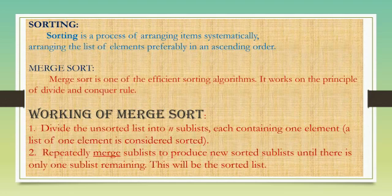First there is an unsorted list. That unsorted list is divided into n sub-lists until each sub-list contains one element — this is how the dividing part is completed. Then we have to merge these elements: we merge adjacent sub-lists to produce a new sorted list, and we continue until we get one complete sorted list.